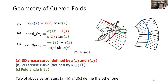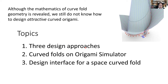With these equations, we can reproduce the 3D shape from the 2D pattern and the 3D curve that represents the crease. The red element is the 3D crease curve defined by curvature and torsion; the blue is the 2D crease curve defined by curvature in 2D; and the fold angle, which is not constant, may differ by position. Given any two of parameters A, B, and C, we can derive the third. Today's topics are: 3D design approaches, curved folds on origami simulator, and the design interface for space curved folds.